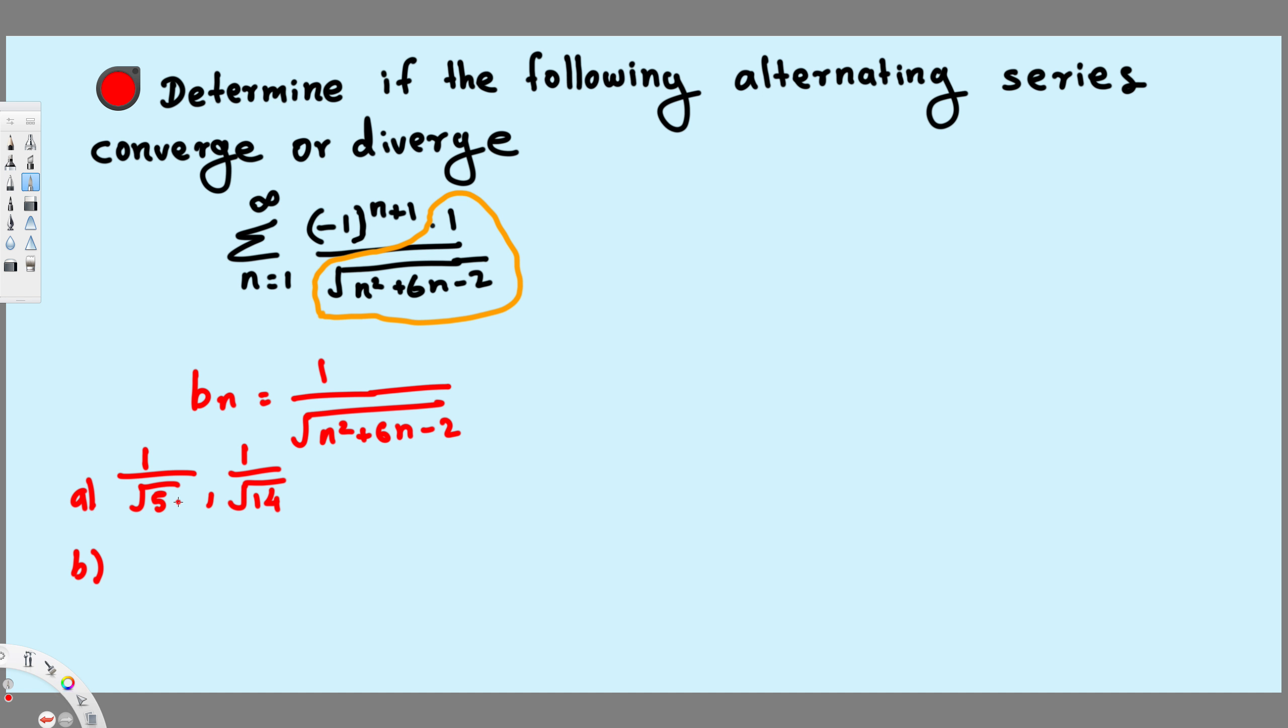If you see the denominator values are increasing, it means as this value increases, the total value is decreasing. Because we are dividing by bigger values, so this is decreasing. So this satisfies the first condition.